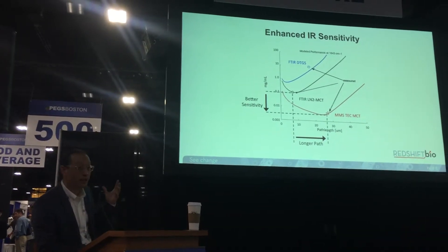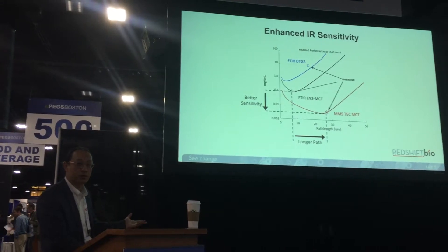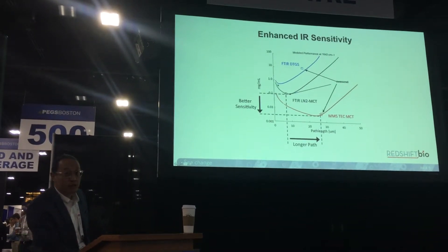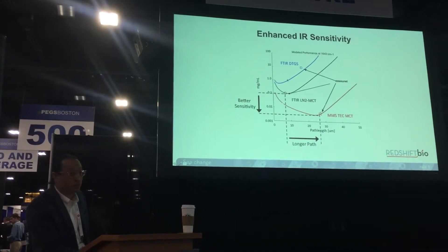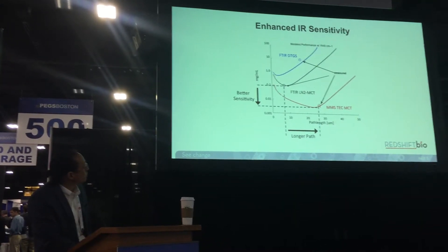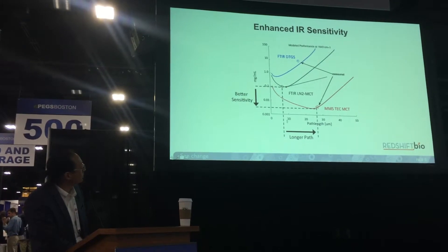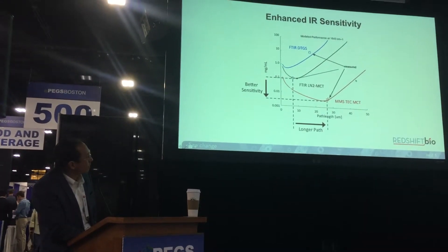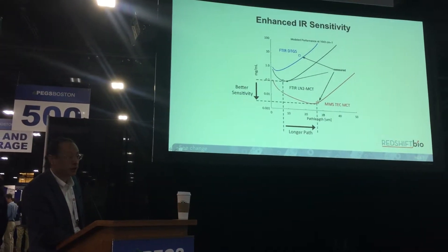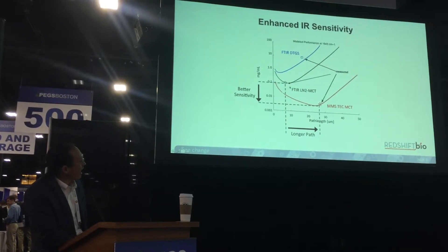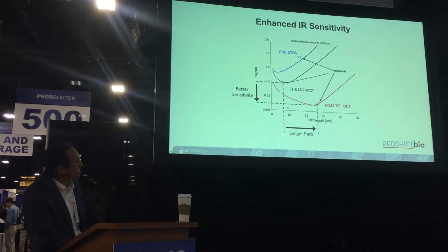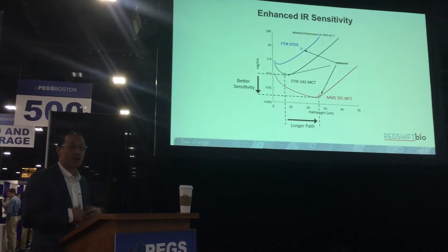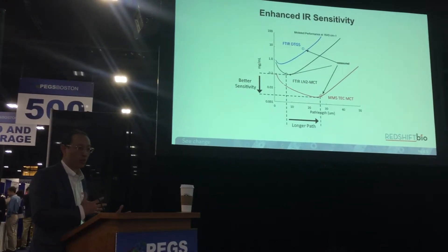How well does MMS work? Looking at sensitivity relative to other IR spectroscopic methods — sensitivity on a log scale versus cell path length on the x-axis — we're comparing three curves: blue and black are conventional spectroscopic methods, with optimal path length around six to seven microns. MMS, shown in red, is about 20 times more sensitive than the state-of-the-art IR spectroscopic tool. In addition, the optimal path length for MMS extends from about six microns out to 26 microns, giving us more signal and a longer path that's less prone to clogging.